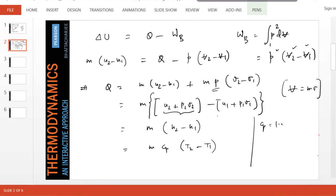cp is 1.005, cv is 0.718 in appropriate units. So mass is 1 kg, cp is almost about 1, times 1000 minus 300, so the answer should be close to 700 kilojoules. We found Q.